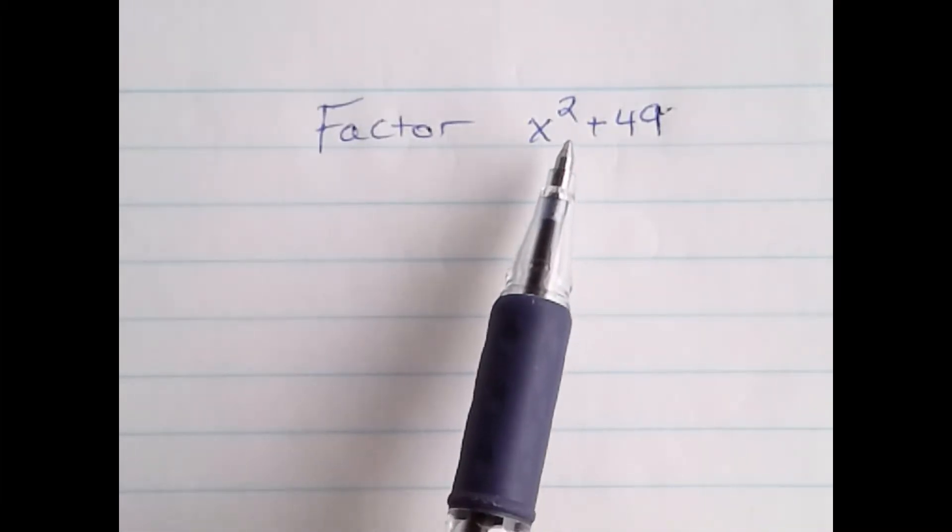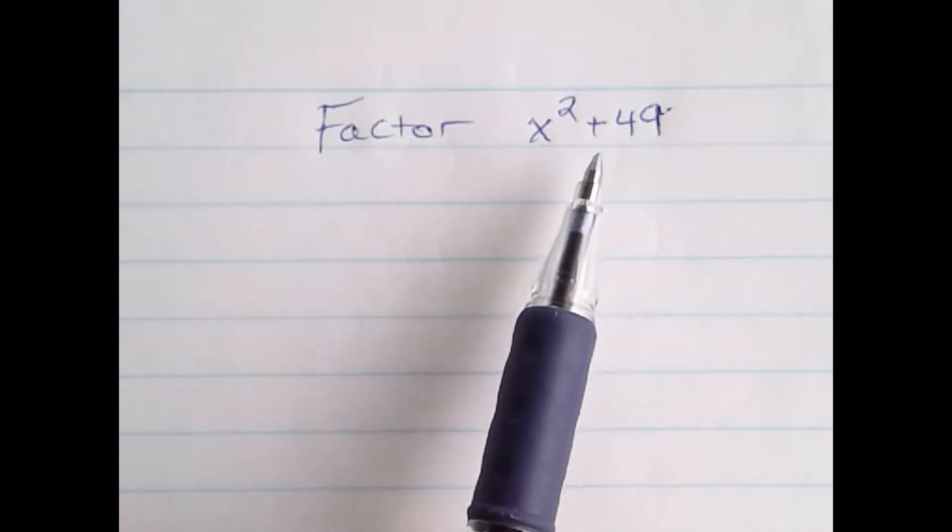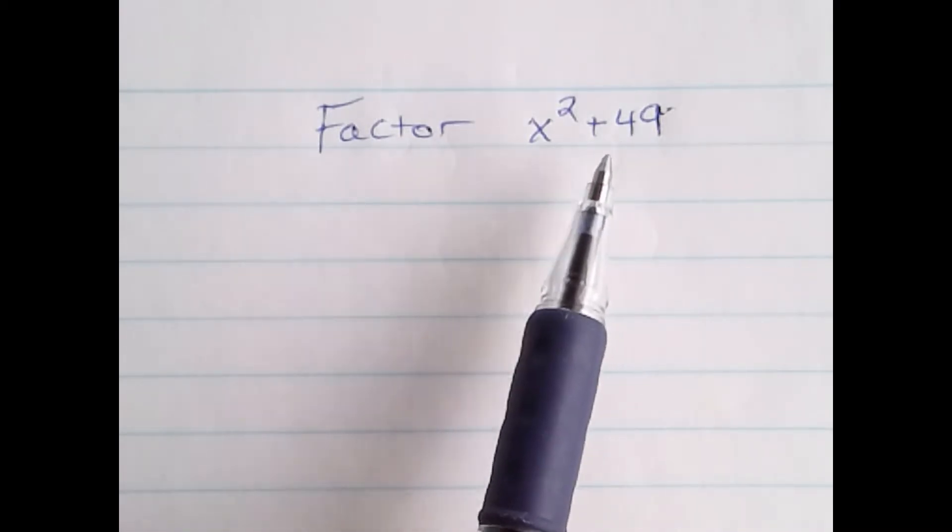Now, it looks like the difference of squares. In fact, it is the sum of two squares. There is actually no formula that we can use to factor a sum of squares.